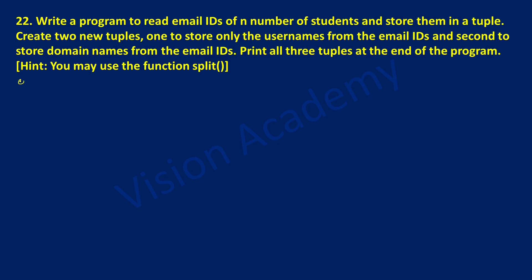Let us begin with a variable called email, and we are going to create an empty tuple. Next, I am going to take one more variable called username, equal to empty tuple. Next, domain name — there should not be any space in between — I am going to write tuple. So we have created three empty tuples for email, username, and domain name.